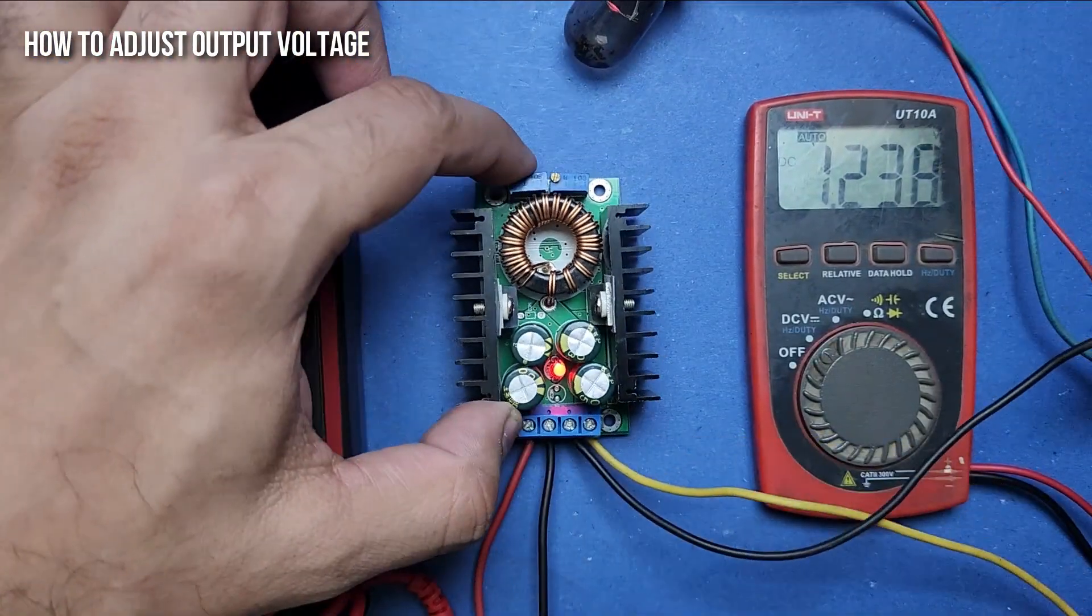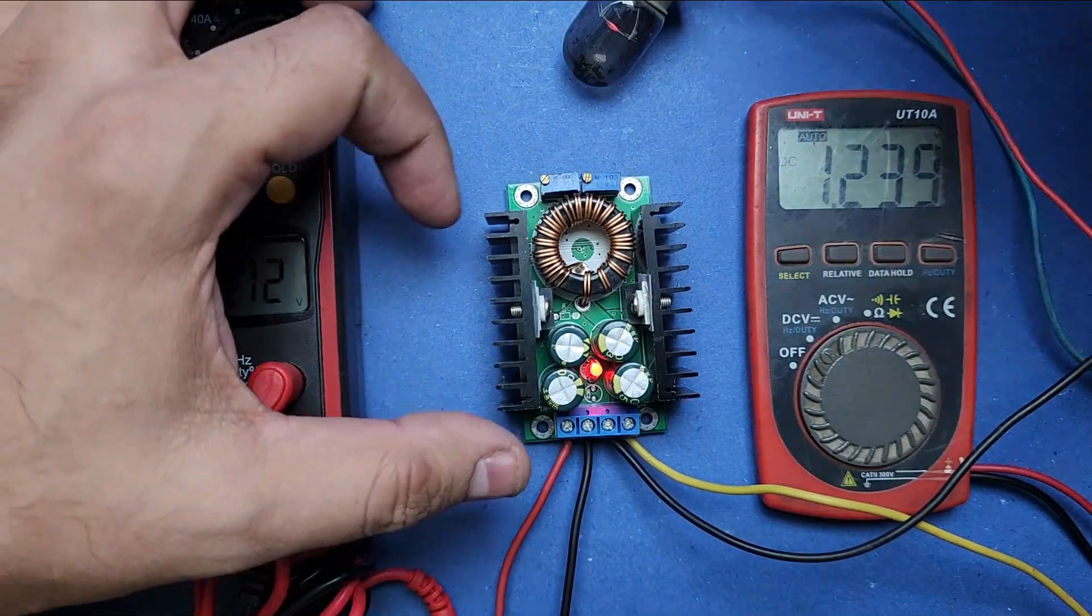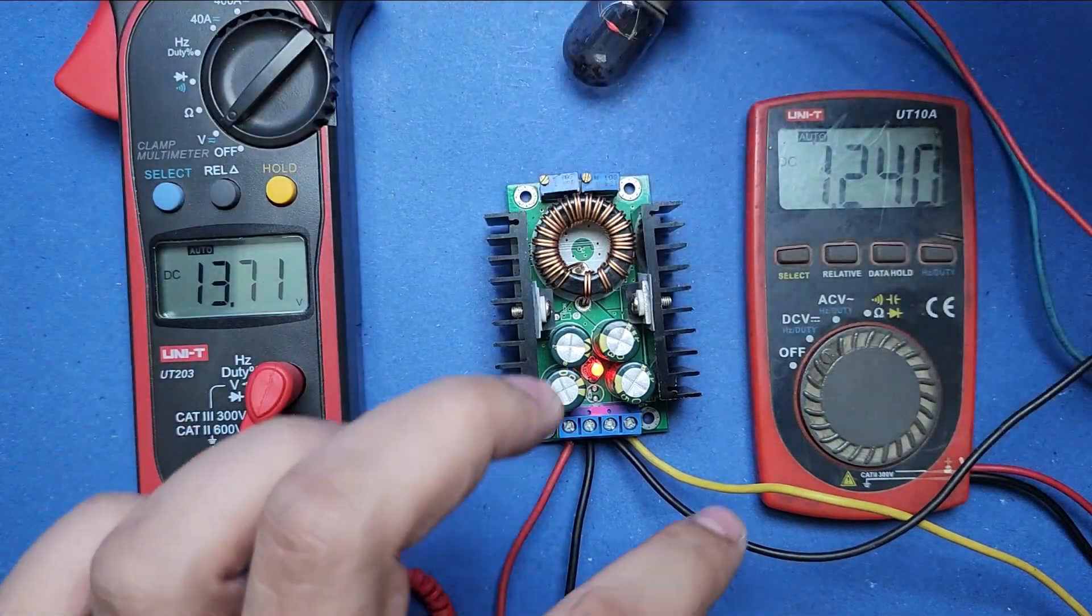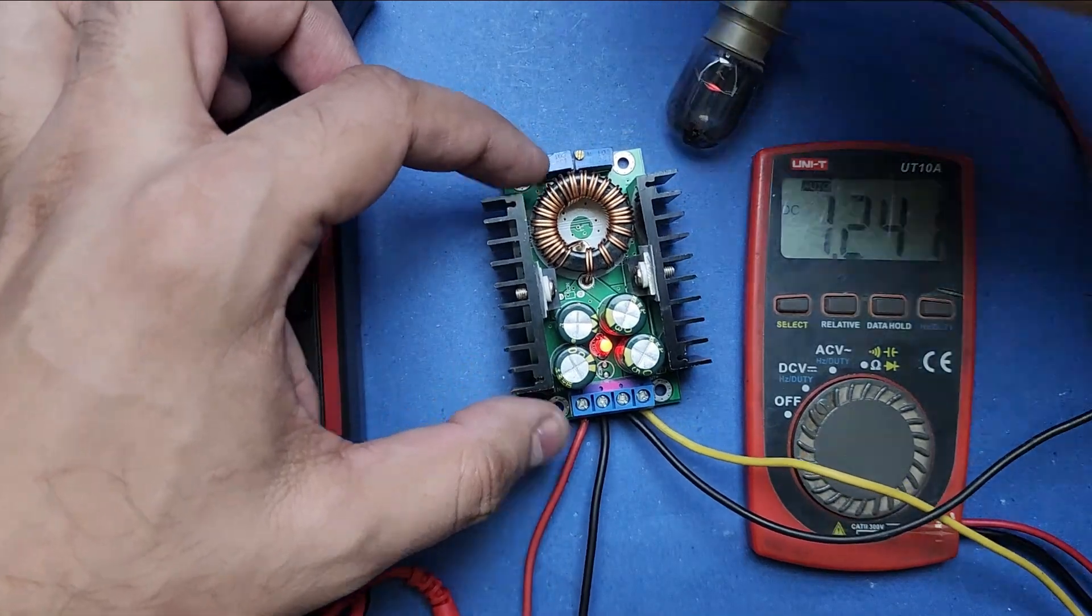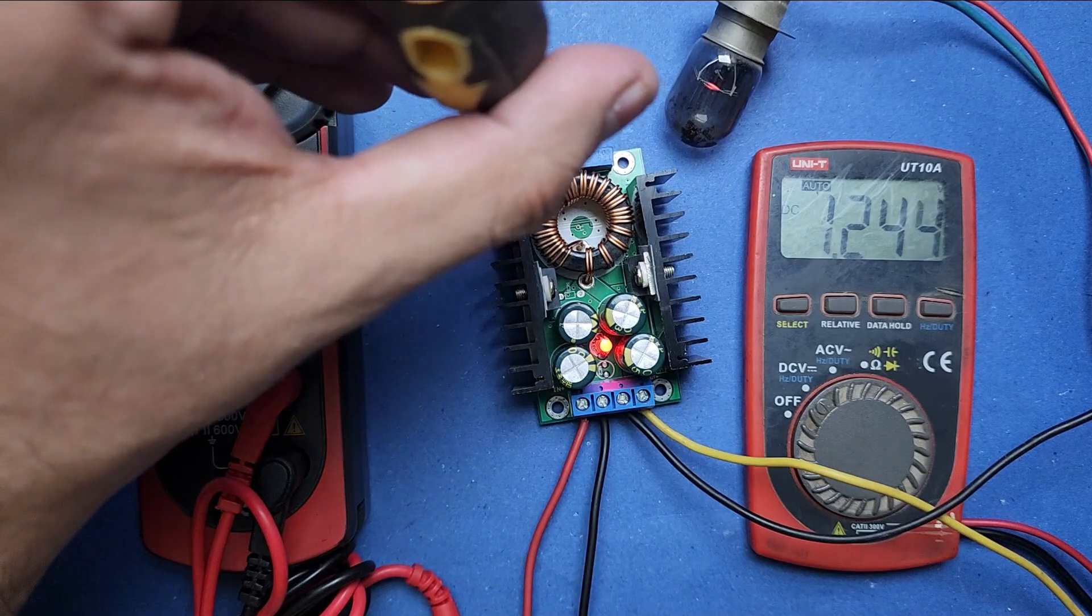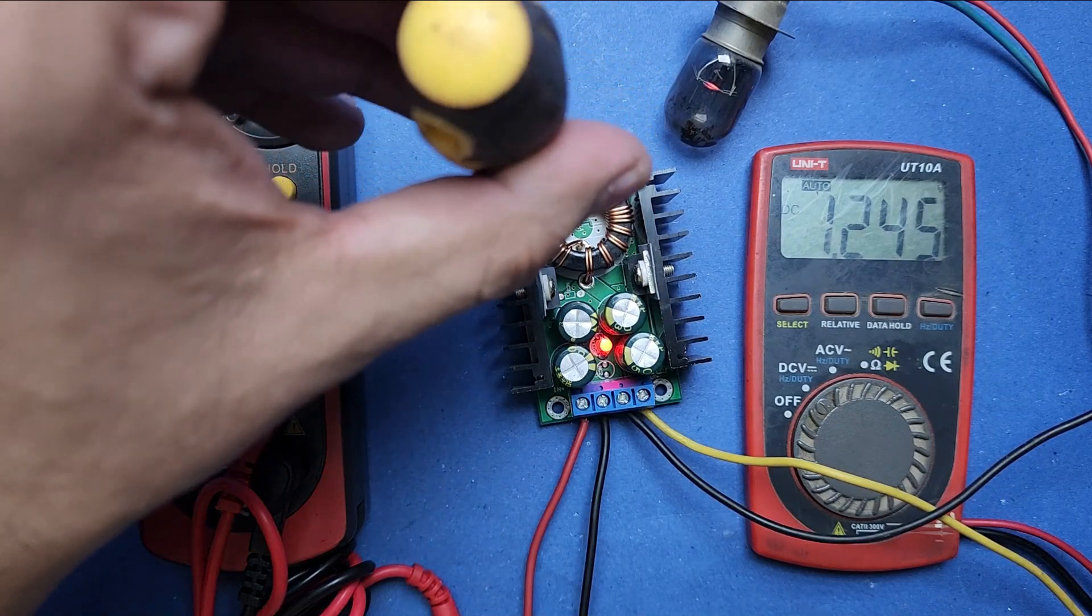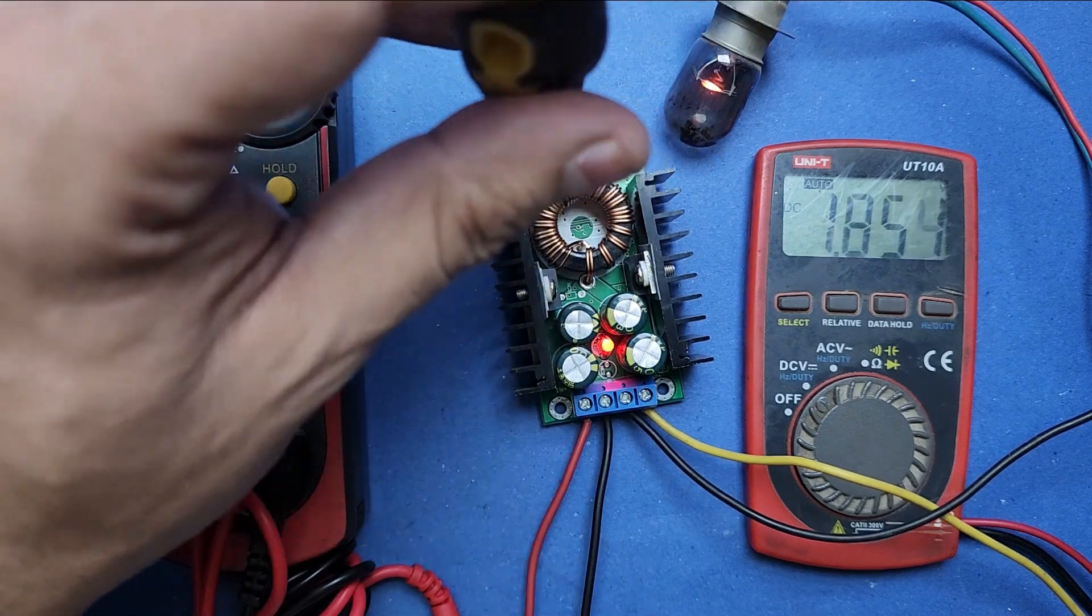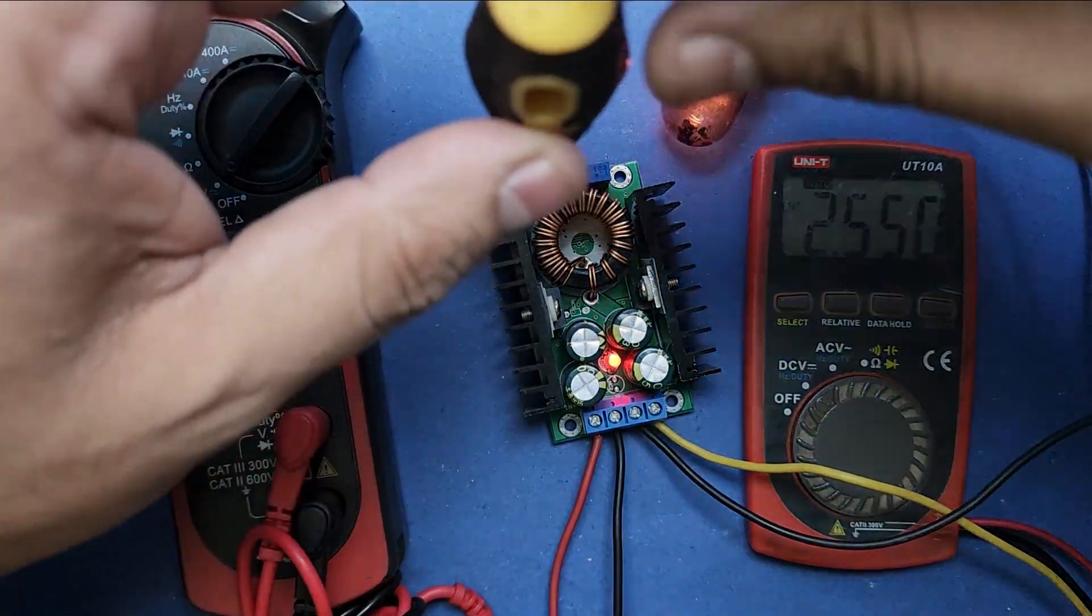Now I will show you how to change the output voltage of the XL4016 buck converter. You can see two small potentiometers on the top of this module. The potentiometer on the left hand is the one used to adjust output voltage. Turning it clockwise will increase the voltage while turning it anti-clockwise will decrease the voltage. Right now I am turning it clockwise and you can see that the output voltage is increasing.